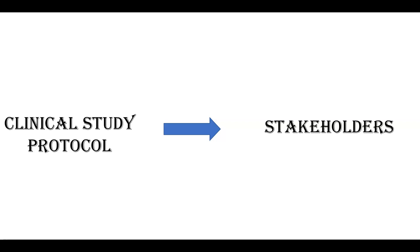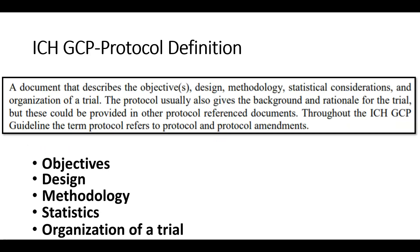Before we go ahead, let's quickly recap the content of a clinical study protocol. Based on its GCP protocol definition, the content of a protocol is based on ICH GCP E6. The content includes describing the clinical trial objectives, design, methodology, statistics, and organization of the study. The stakeholders for the clinical study protocol therefore reflect the content of this document.